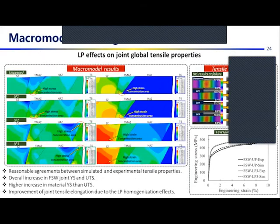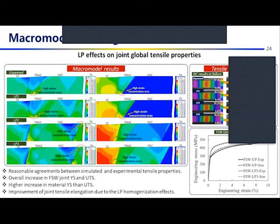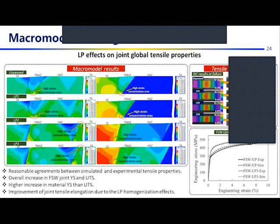For the macro model, there is reasonable agreement between simulated and experimentally obtained results for tensile tests. We can see an overall increase in joint yield strength and UTS, with a higher increase for yield strength due to work-hardening effects that do not affect UTS. We observe improvement in joint homogeneity: before laser peening, the highest stress concentration was at the TMAZ-HAZ border due to high heterogeneity of mechanical properties, leading to strain concentration and failure in that area. After multiple laser peening passes, this gap narrows, relocating the strain concentration to the SC area, which changes the tensile failure mechanism and leads to higher elongation.